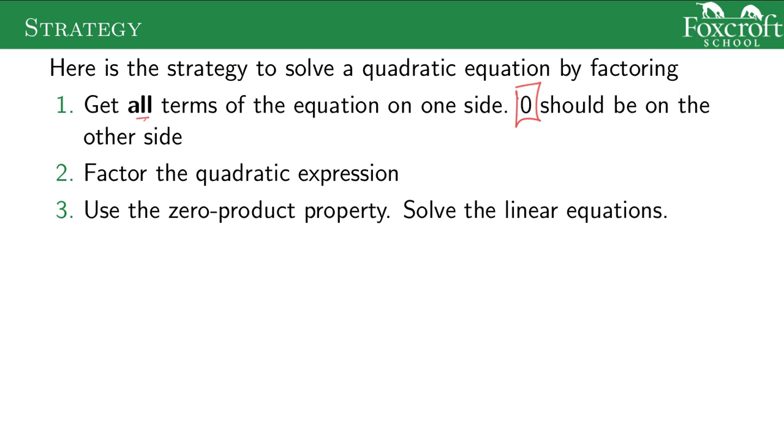After that, we'll have this quadratic expression that we should be able to factor. When we factor, we unfoil it into these two terms, which again are equal to zero. Now we can use the zero product property, just take each one of these individual things and set them equal to zero. Then we can just solve linear equations instead of solving a quadratic equation.